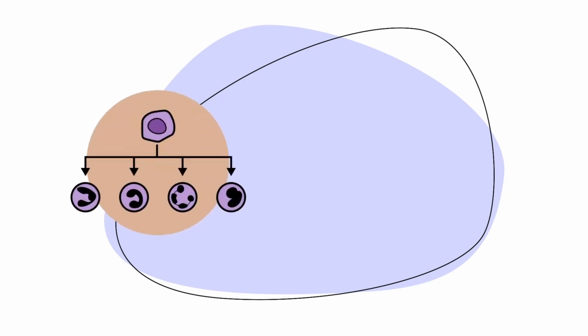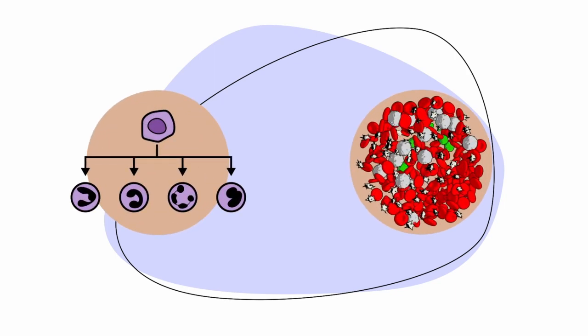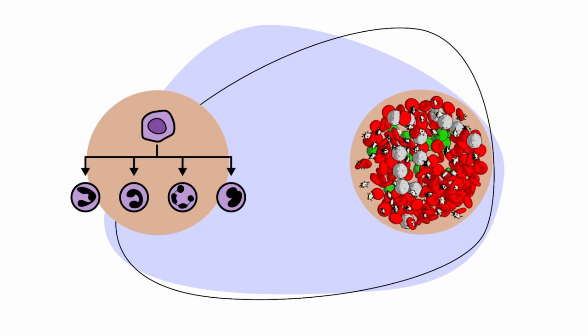The PML-RARA gene causes stem cells to get stuck at an early stage in their development and start to grow uncontrollably, causing cancer.